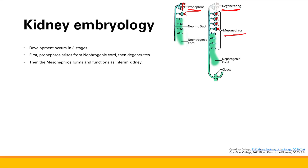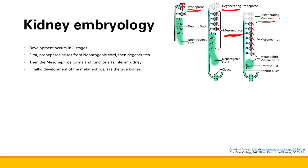Then the mesonephros is going to come about, and the mesonephros is going to function as the interim kidney. After a little while, it's going to do one of two things. If you're a male, it's going to persist as the Wolffian ducts, which become the ductus deferens and other parts of the male reproductive system. In females, the mesonephros will regress and degenerate.